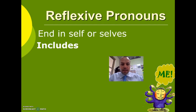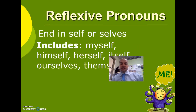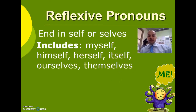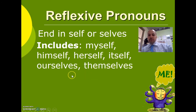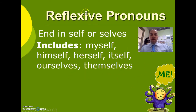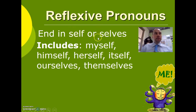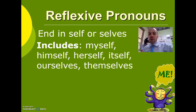These are the other reflexive pronouns: myself, himself, herself, itself, ourselves, and themselves. Remember, reflexive pronouns end in 'self' or 'selves,' and they refer to either the noun — the antecedent — or the pronoun, which can also be the antecedent.